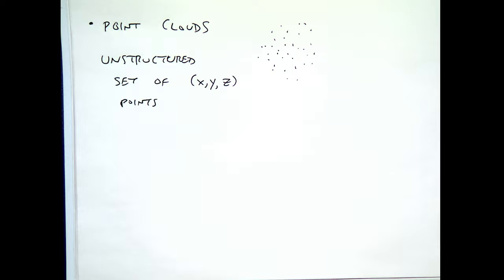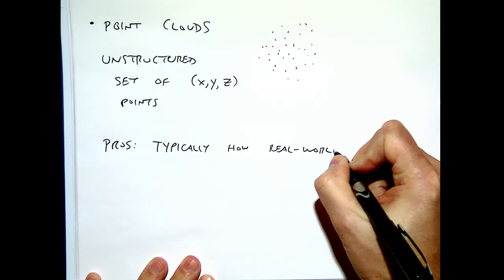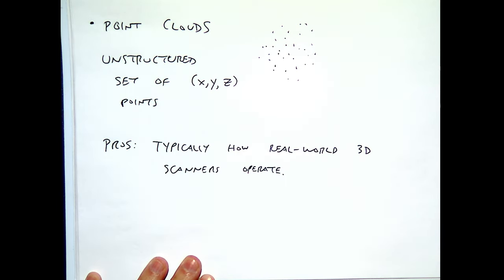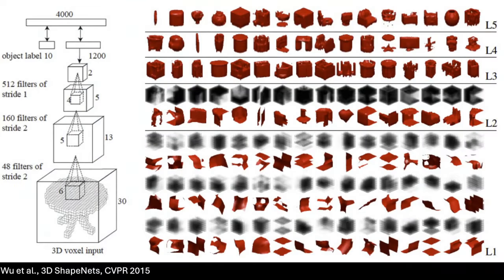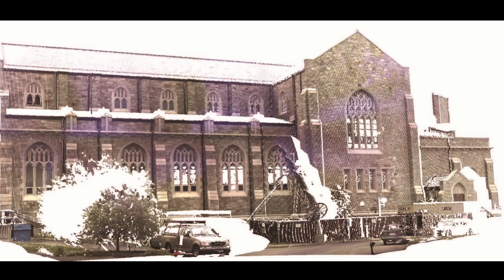The advantage of point clouds is that if you're scanning someone's head, there's no notion of free space — you're only distributing points around the surface. You can attach an RGB color to each point. The pros are that this is typically how real-world 3D scanners operate. I did a lot of work with 3D scanning — we used a LiDAR scanner, often used in surveying and visual effects to create fine detailed versions of buildings. We took this scanner out to places on campus and scanned buildings.